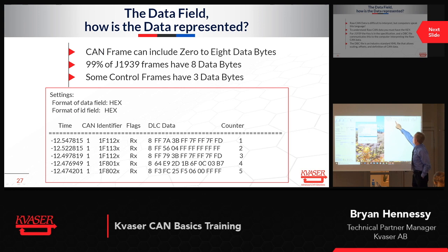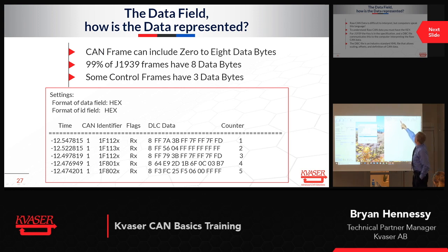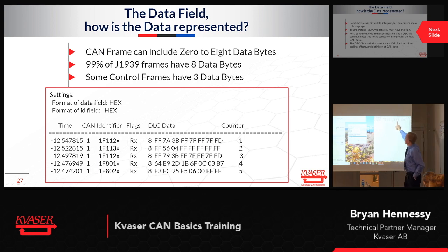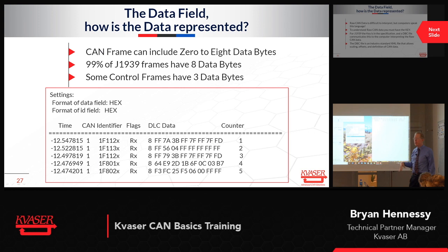Rate of turn is in the next byte — I won't get into that in detail, but it's the same principle. There's a lot of other information in these frames. The DBC file I'm using is a custom one I created just to understand what they do. It's a simple one that only defines a little bit of the data. Heading is only two bytes out of eight in one frame — there's a lot of information packed in there.